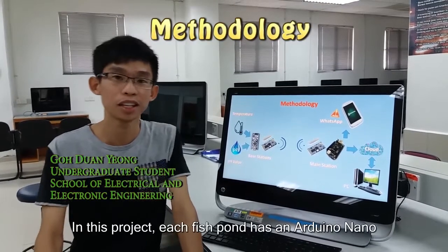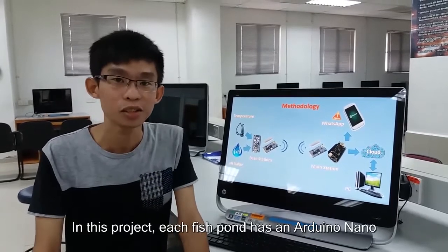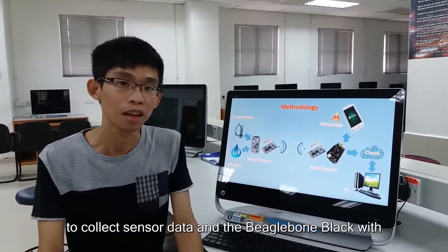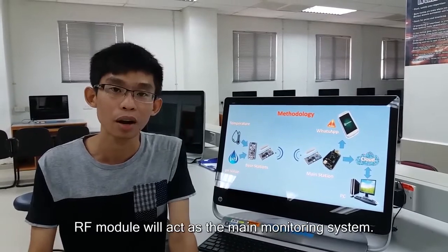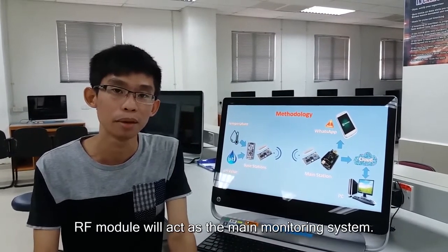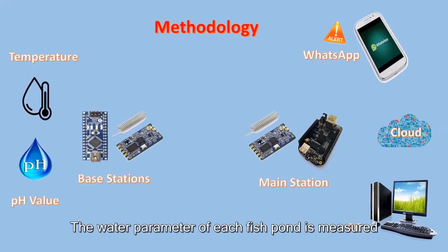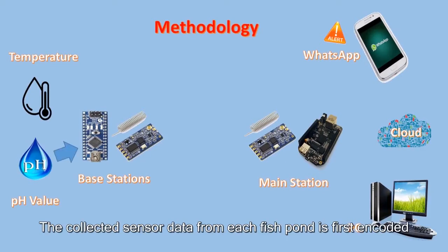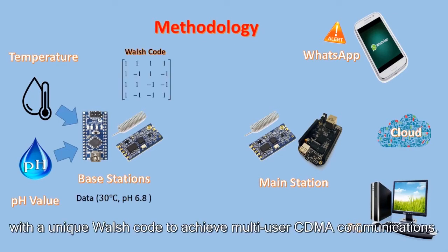In this project, each fish pond station has an Arduino Nano to collect sensor data, and a Raspberry Pi with ARM is used as the main monitoring system. The water parameter of each station is measured using a water temperature and pH sensor. The collected sensor data for each station is first encoded with a Walsh code to achieve multi-user CDMA communication.